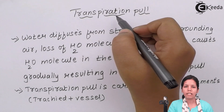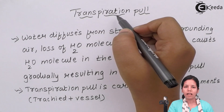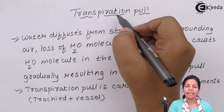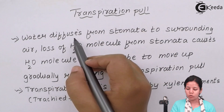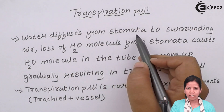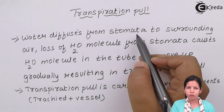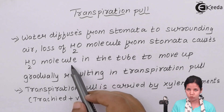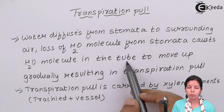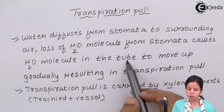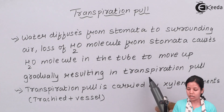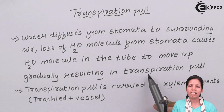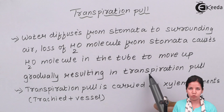Transpirational pull, or in simple language, the upward movement of water in a plant. Whenever water is lost from stomata, precisely from the guard cells of the stomata due to sun's energy, water molecules present inside the soil are pulled up with the help of the xylem tube, which results in transpirational pull. Basically, transpirational pull is the upward movement of water from soil to other parts of the plant.